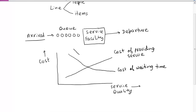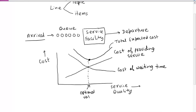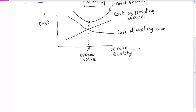If we add those two curves, we get a total expected cost curve. This total expected cost is obtained by adding the cost of providing service and the cost of waiting time. There is an optimal point on the x-axis that minimizes total cost. One can increase service quality, but that will also increase service cost and raise total cost. So that optimal point is the most economical value to operate at.